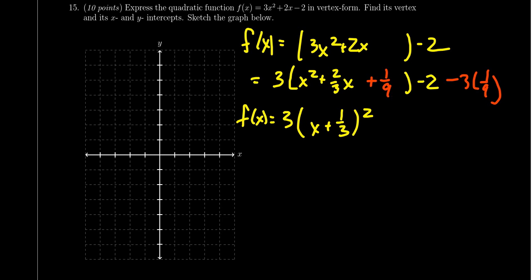Then we have 3 goes into 1 ninth. That's going to give you right here negative 1 third. So I'm going to rewrite this negative 2 as negative 6 thirds. So we combine them together. So we end up with negative 7 thirds like so.